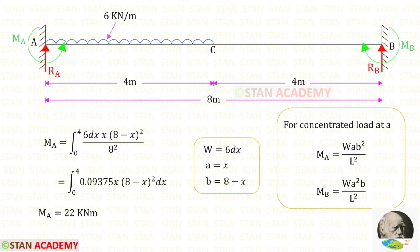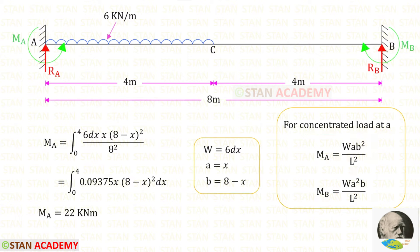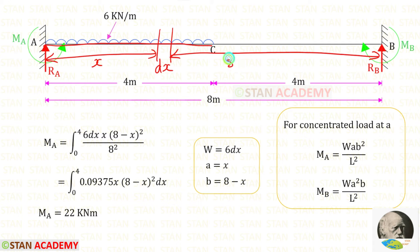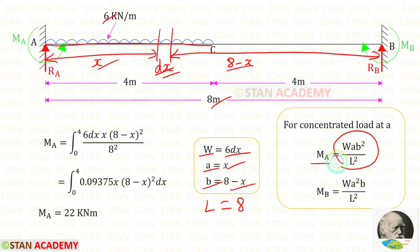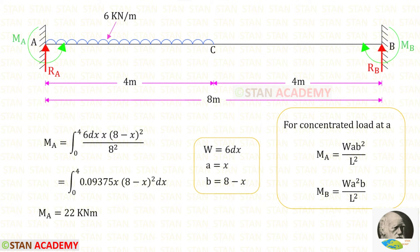Alternatively, we can use integration to find the fixed end moments. We know that if a concentrated load acts at distance A from the left in a fixed beam, the formula to find MA is WAB²/L². Let us consider an elementary distance dx at a distance x from point A. So the remaining distance is 8 minus x. In the dx portion, the load W is 6dx. Here A is x, B is 8 minus x, and L is 8. Substituting into the formula for MA and setting up the integration with limits 0 to 4.